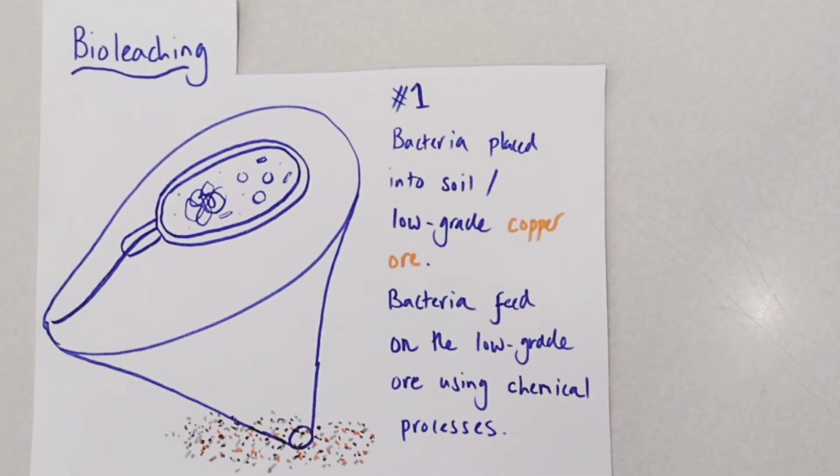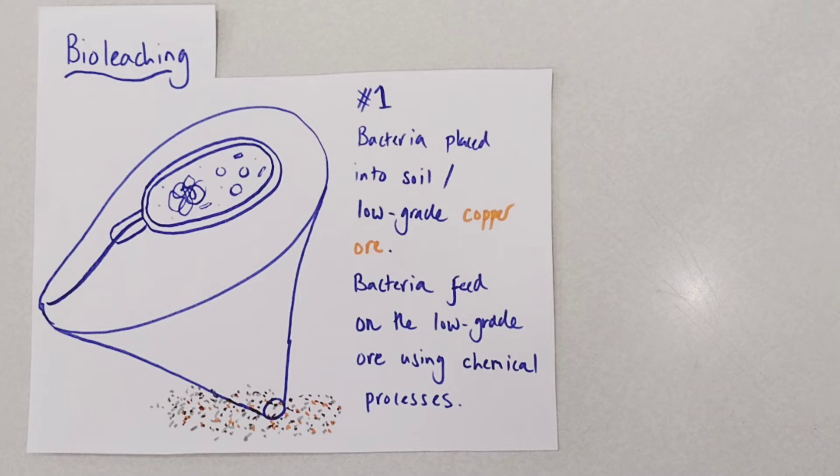The second technique we're going to look at is bioleaching. Now the bio is referring to living organisms, in this case microorganisms, bacteria. In this method bacteria are placed into the soil around a mining site or onto the low-grade copper ore itself.